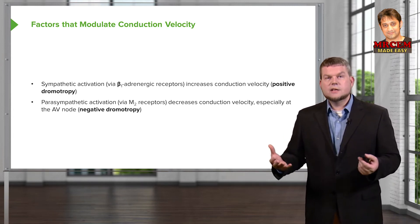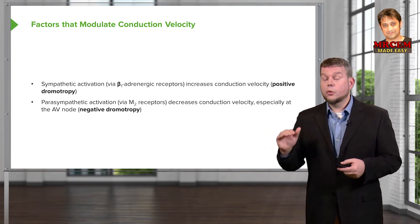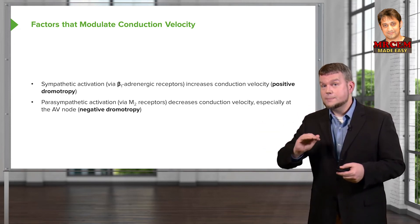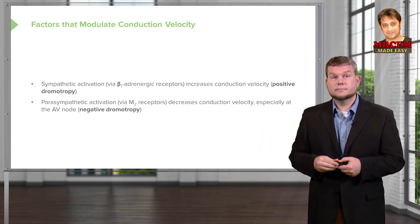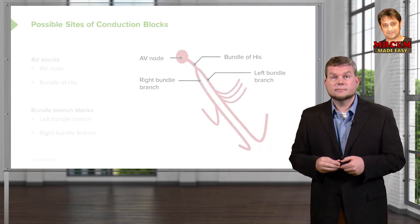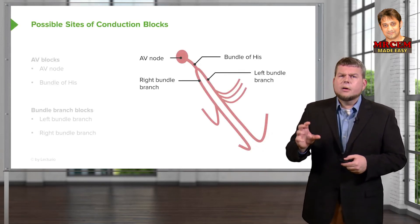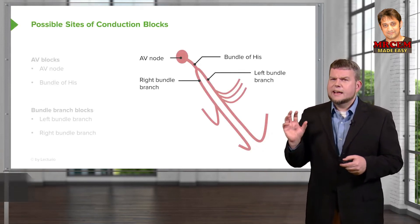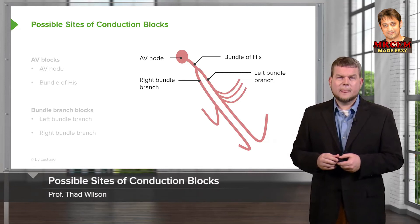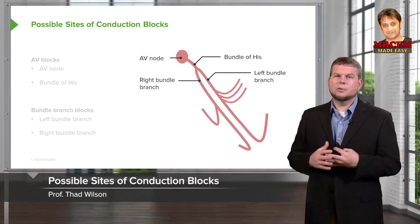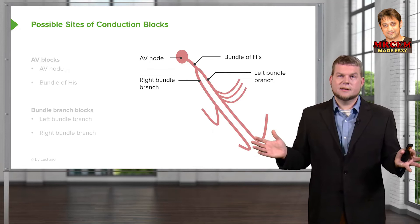So to recap: chronotropy is heart rate, and dromotropy is speed of conduction. Now, anytime we talk about pathology, there are places where this whole process could go awry.